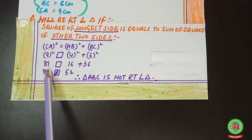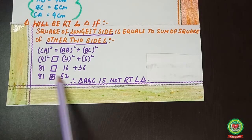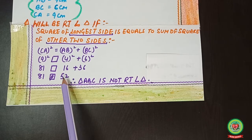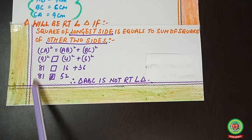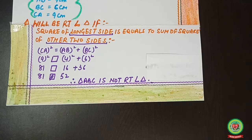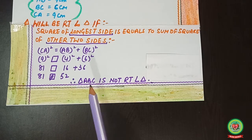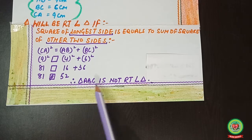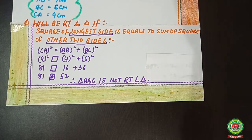So 9² = 81, 4² = 16, and 6² = 36. That gives 81 ? 16 + 36 = 52. Left hand side is 81 and right hand side is 52, which are not the same. Therefore, triangle ABC is not a right angle triangle.